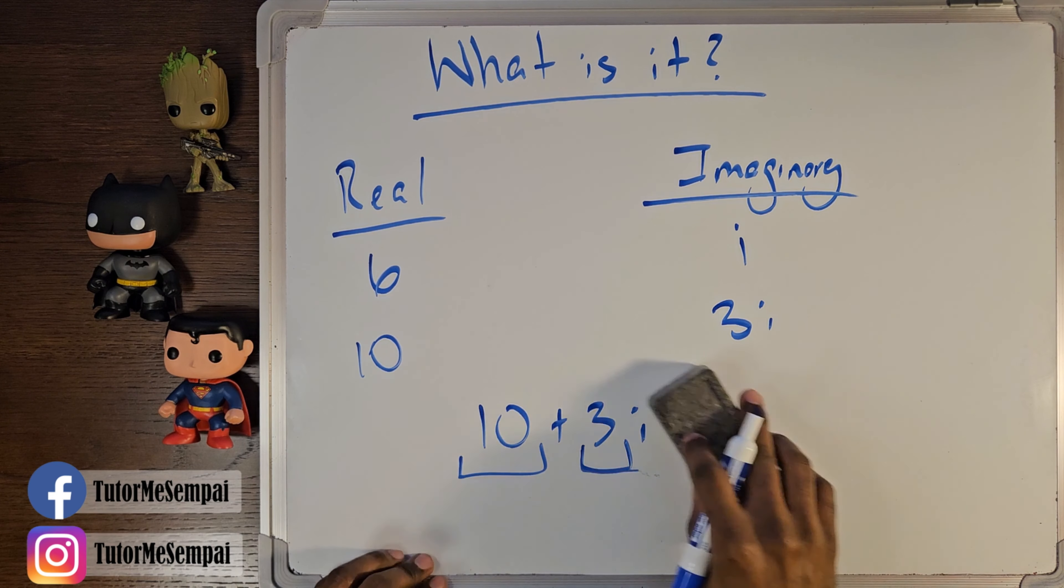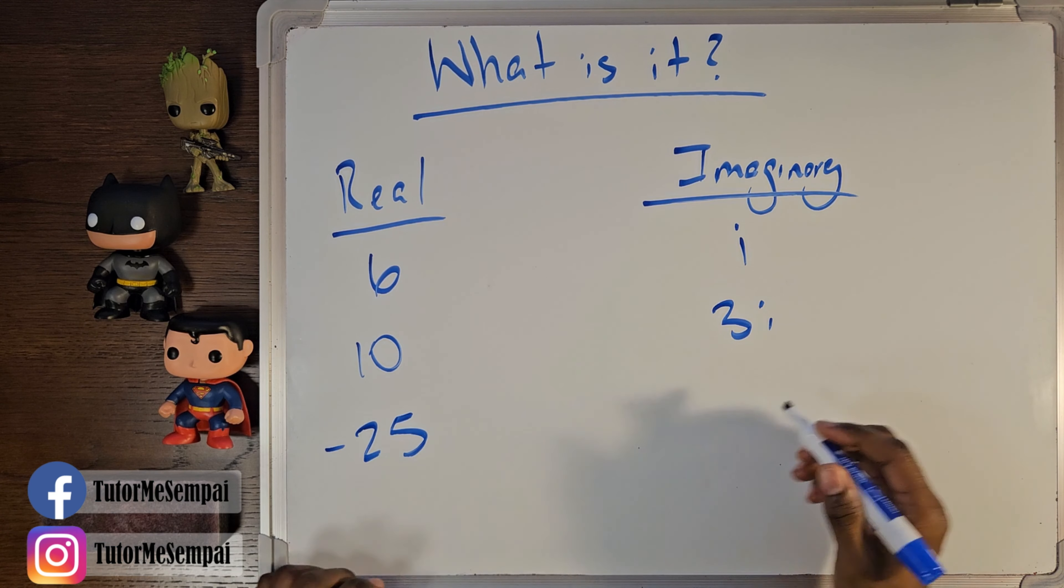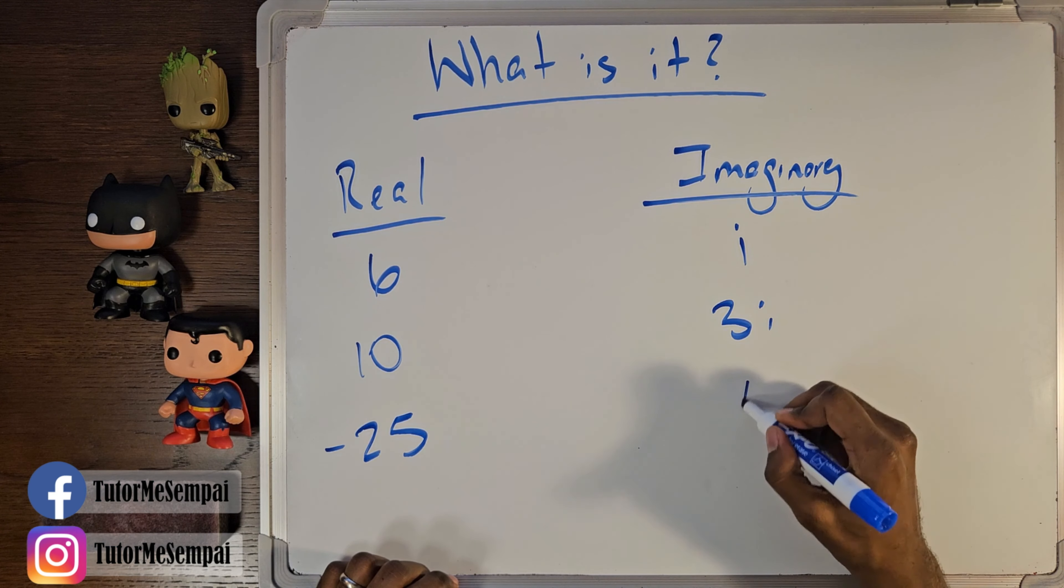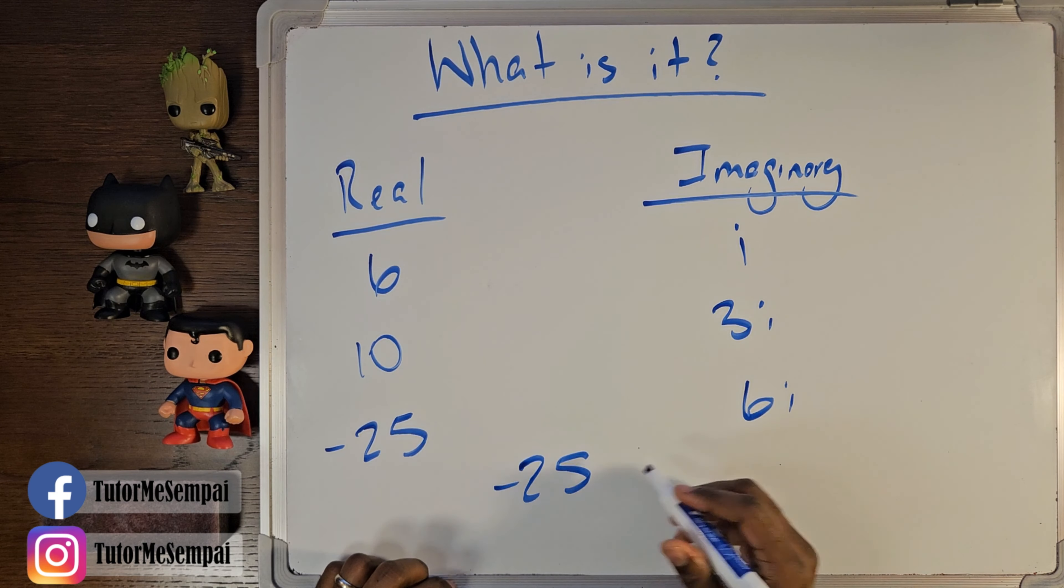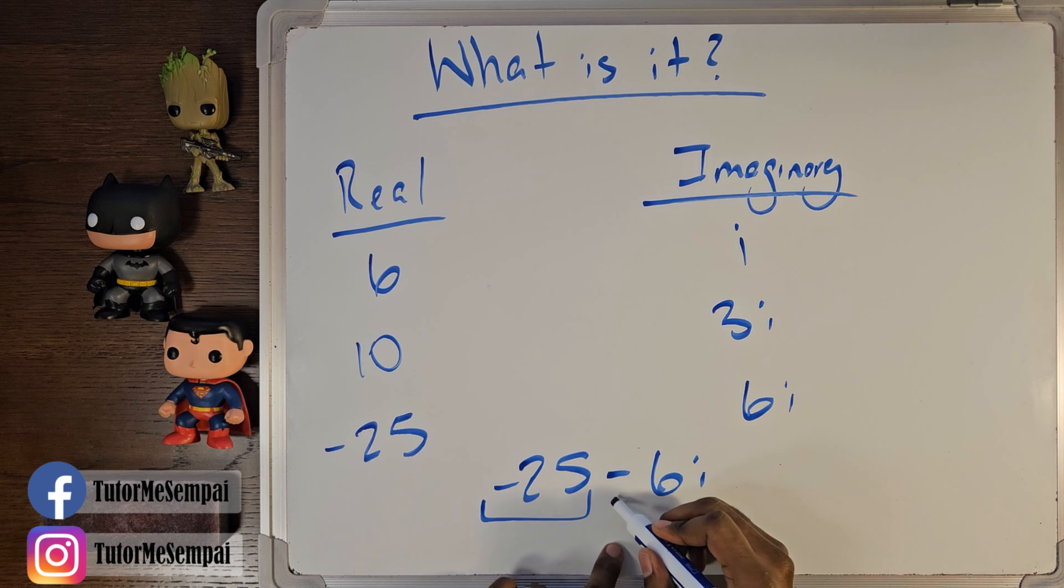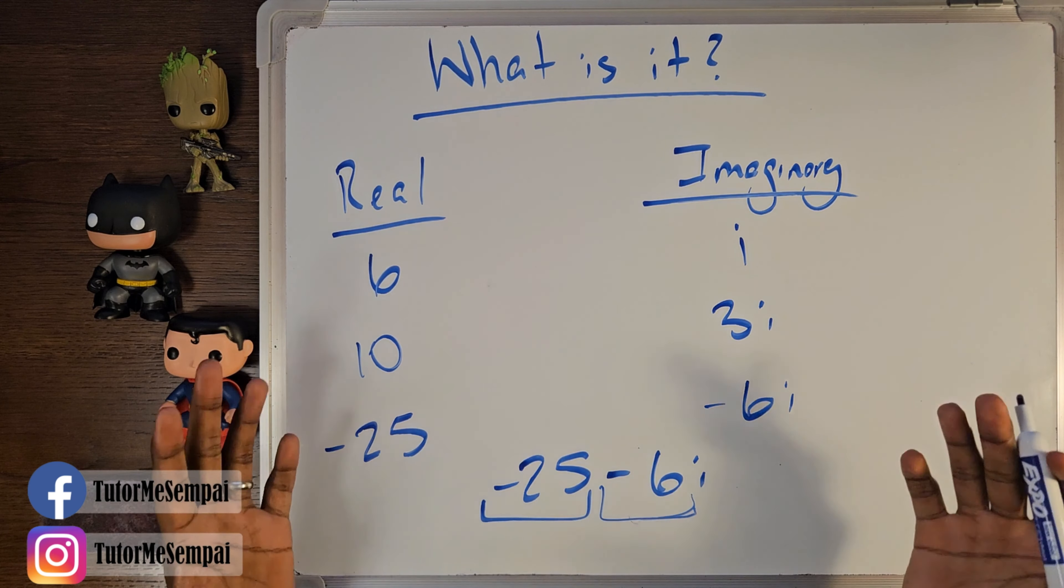You don't even have to stop with addition here. You can also do something like this. Let's say you have negative 25, and you have this 6i here. If you had something like negative 25 minus 6i, you know that the negative 25 came from the real portion. This is your real component of your complex. And you have this 6, or negative 6, that came from the imaginary camp, which makes up your imaginary component of your complex number.